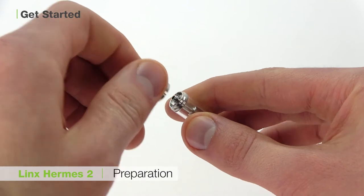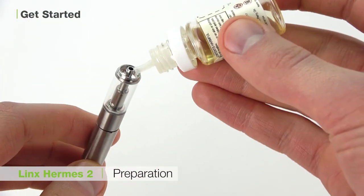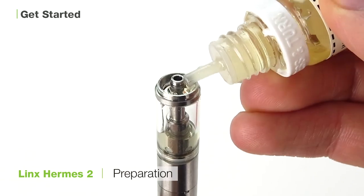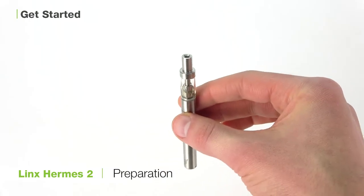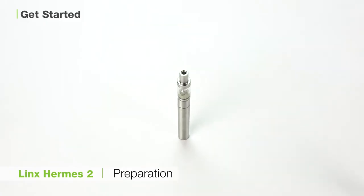To load your unit, first unscrew the mouthpiece from the heating chamber. Using a fine tip, place some oil or e-juice in the tank, ensuring to soak the cotton wicking for at least 5 minutes. Give the tank a gentle shake to help the material get saturated, and then you are ready to vaporize.